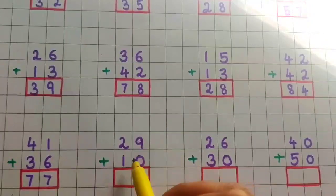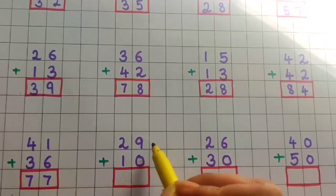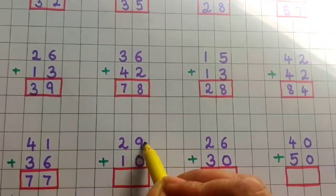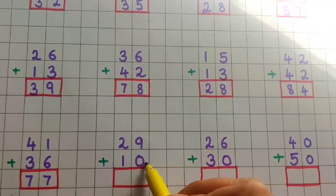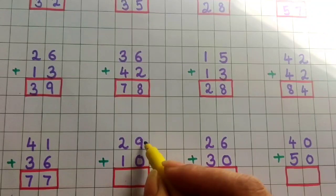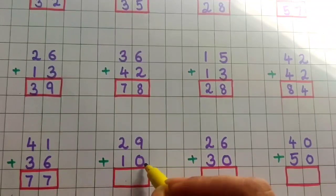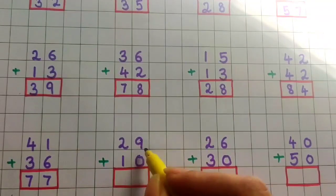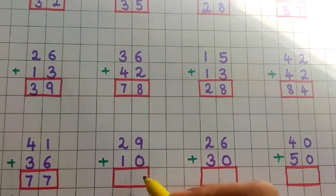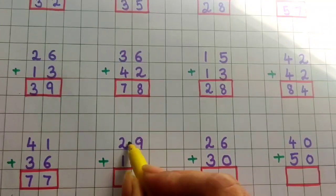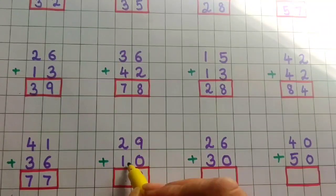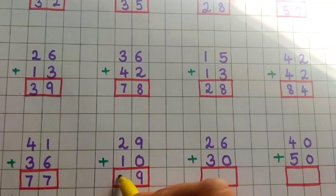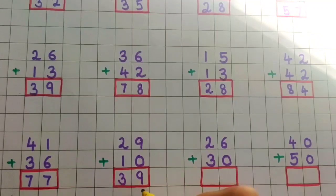Now the next problem: 29 plus 10. So 9 plus 0 — if we add any number with 0, the answer will be the same number. So 9 plus 0 will be 9 only. And then 2 plus 1 is 3. So the answer is 39.